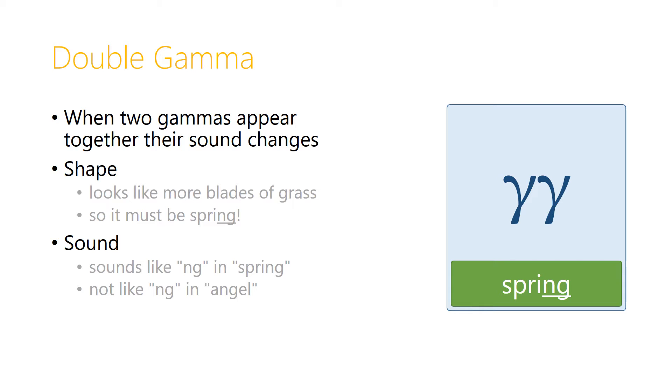And it's that NG sound, like in spring, that two gammas make when they come together. Not like NG in angel, it's always the NG sound, like the NG at the end of spring.